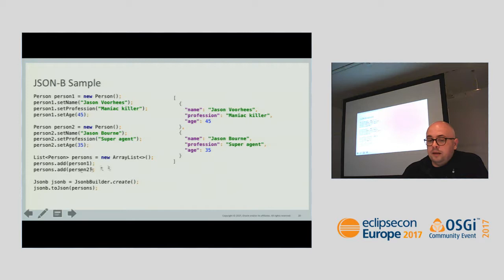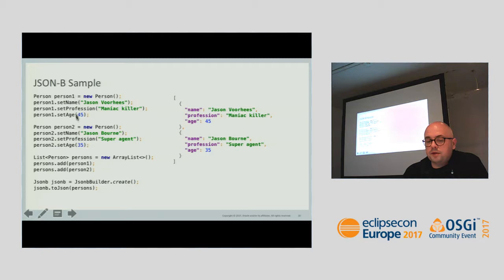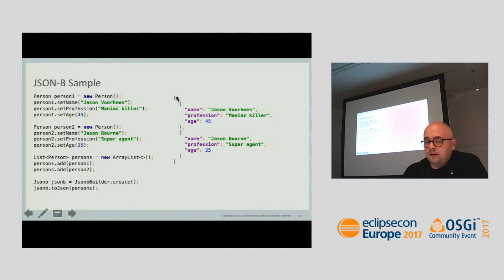Here is a sample showing how it works. We have some Java model classes — for a list of persons. The code creates one person, creates another person, creates a list of these persons, then creates the JSONB engine and calls toJson to serialize it. By default, formatting is switched off so the output is on one line, but internally it's the same structured document.